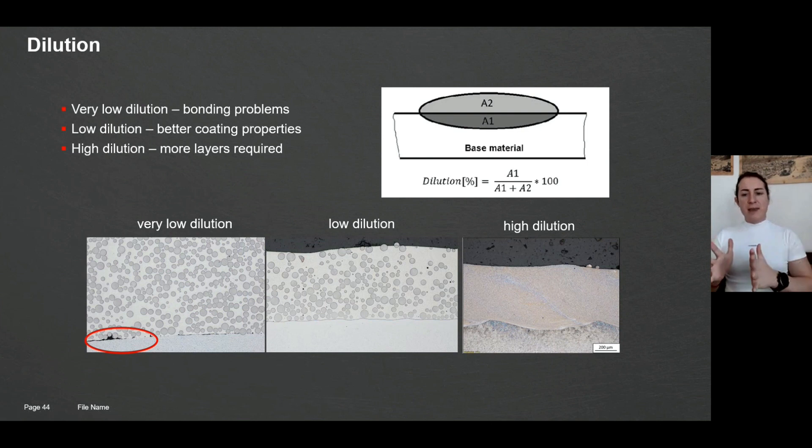Dilution can be defined in three main directions. Very low dilution—in that case we also don't want to have it because you definitely have not enough bonding and you have formation of certain defects which can result in spallation of coating out of the surface. Another one is low dilution. Low dilution in my opinion is every value which is between 5 to 10 percent and gives you stable coating with no defects and not much diffusion of base material inside of your coating, so you basically do not influence strongly the properties of your coating.